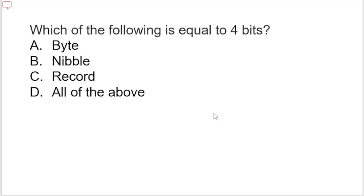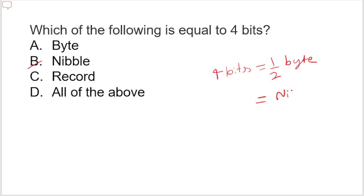Which of the following is equal to four bits? Options are: byte, nibble, record, all of the above. The correct option is nibble. A group of four bits is called a nibble — it is equal to half a byte.